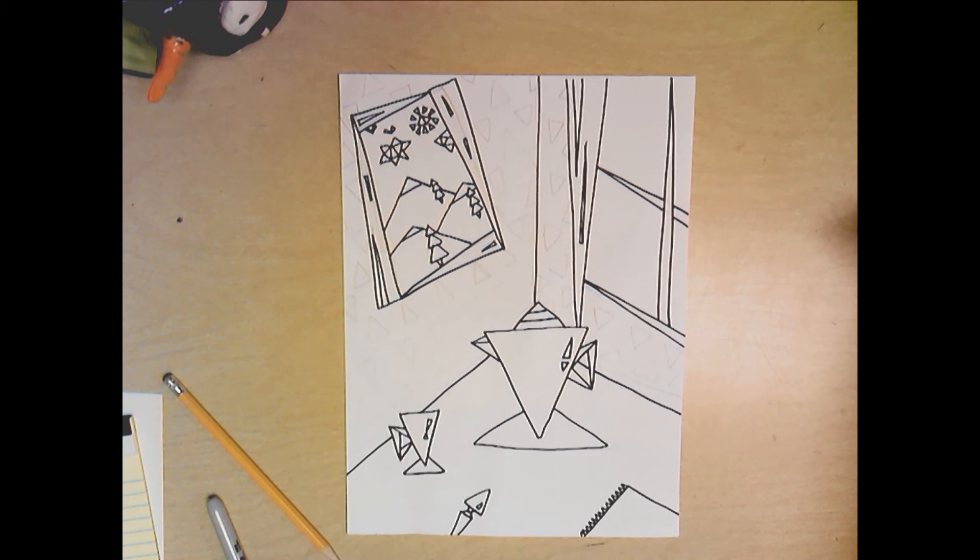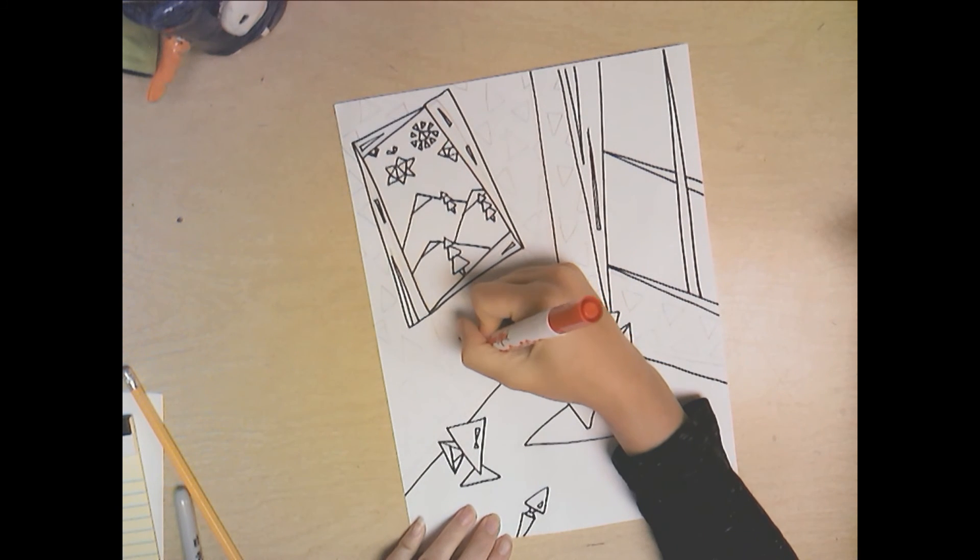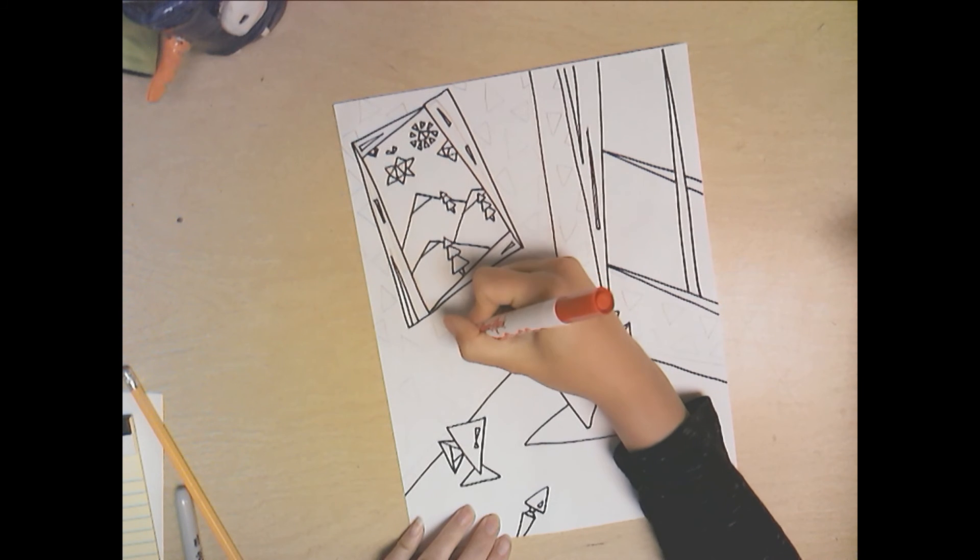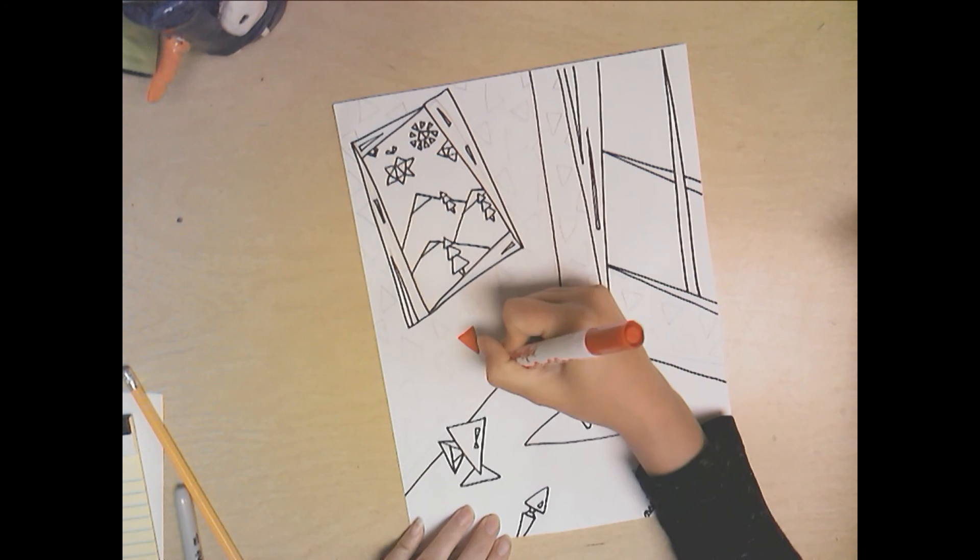So now you're going to pick your media. You're going to go to town on what you want this to look like. So I'm probably just going to stick with markers and crayons for mine, but you could use paints, drawing media, markers, crayons, colored pencils, oil pastels. If you want to use oil pastels this will be your choice and how you want to do this.